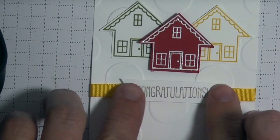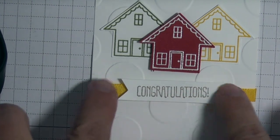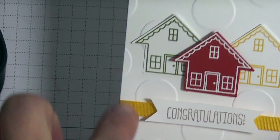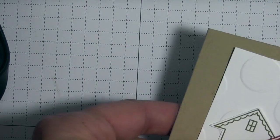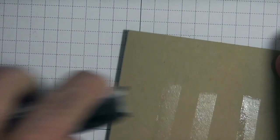You could stitch on the outline of here if you wanted to give it some dimension. I think that would be really cute. Now I'm just going to take my snail and put it here in the middle of the card, and the panel is going to go right there.